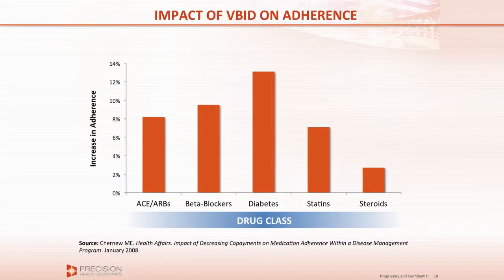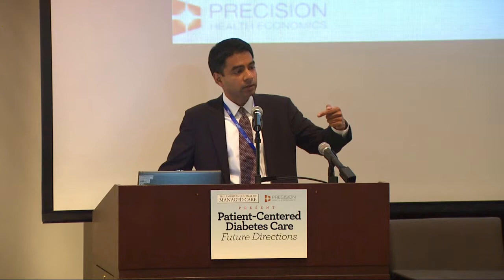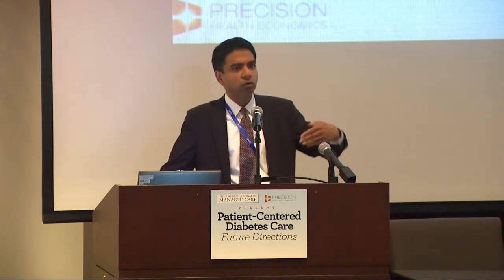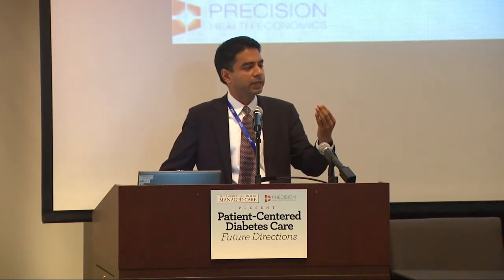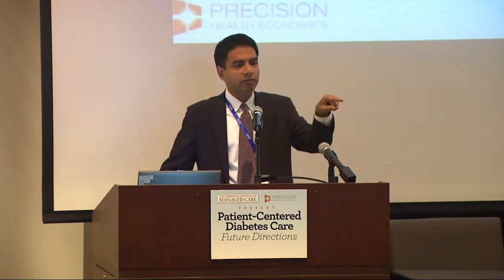The great benefit of value-based insurance design is its protective effects on adherence. There's a paper by Mike Chernow's team in Health Affairs showing what the increase in adherence would be if we moved various preventive drug types into a VBID model. For something like diabetes drugs and beta blockers, the increase in adherence would be really substantial. Even though VBID may cost money in the short run — reducing co-payments means the payer pays more and the patient pays less — what we need to figure out in the long run is how much of these benefits accrue back to the plan through keeping patients out of the hospital.